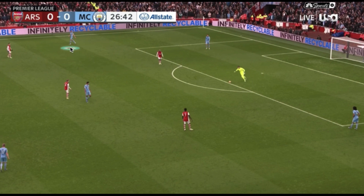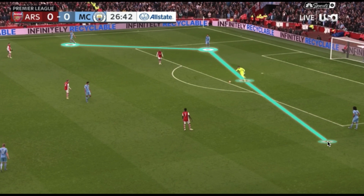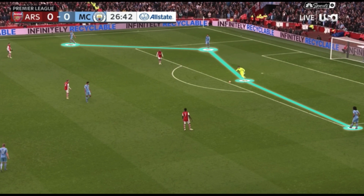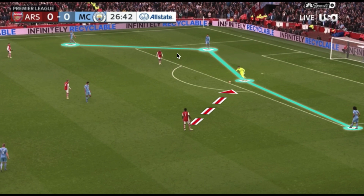Manchester City did some different things in their buildup with their two central defenders, causing asymmetry. They had both Laporte and Ruben Diaz go to the right side of the field, which allowed Ederson to occupy the left side with Nathan Ake. This asymmetry created a free man on the right-hand side due to numerical superiority. For Arsenal's 4-2-3-1 press, Saka now had more decisions on who to press because of the changed reference points among the central defenders. If Lacazette didn't adjust his positioning, Martinelli would be left with an extra player to press, leaving Cancelo free to invert and get on the ball.